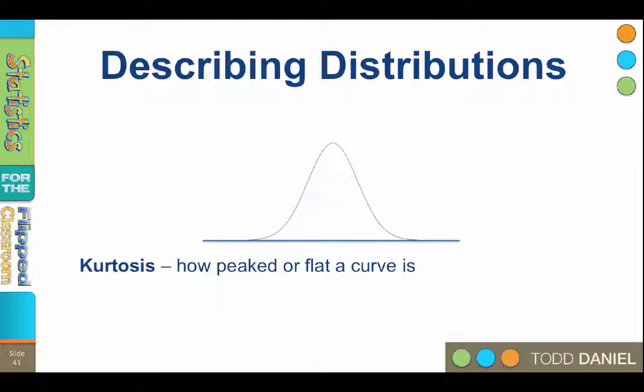The first difference that we may find is that the scores in the distribution are more spread out than we would have expected. Or we may find the scores are more closely packed together than we expected. The name for the peaked or flatness of a curve is called kurtosis.